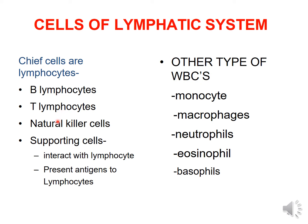Other types of white blood cells that are part of the lymphatic system include monocytes, macrophages, neutrophils, eosinophils, and basophils.